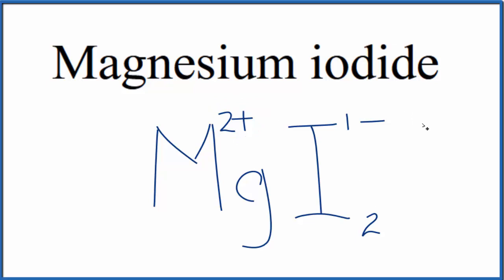Net charge is 0. So this is the formula for magnesium iodide, MgI2.